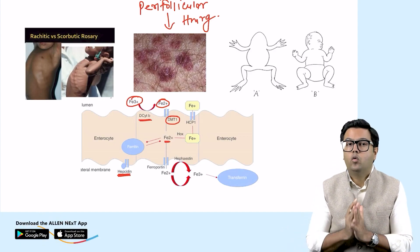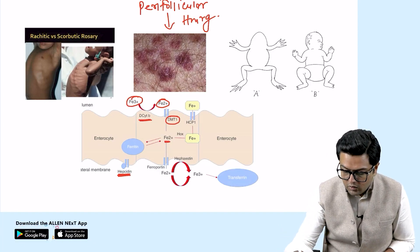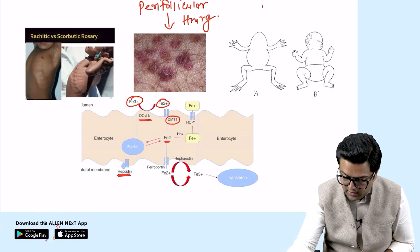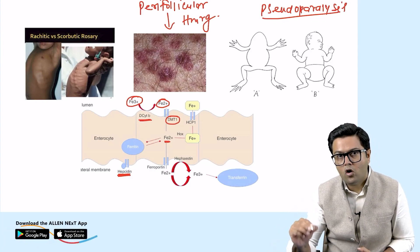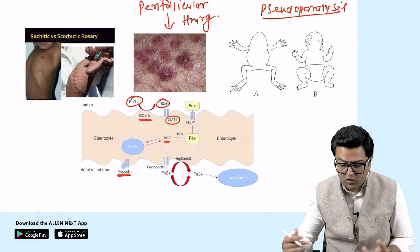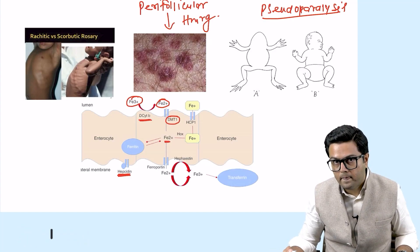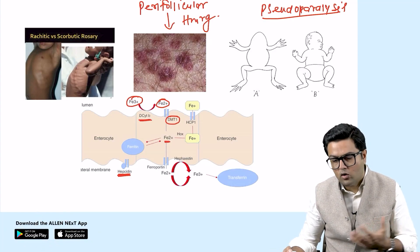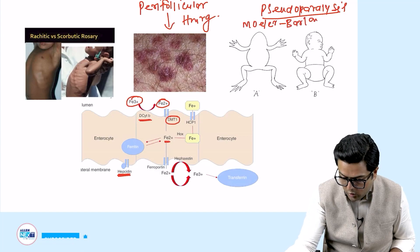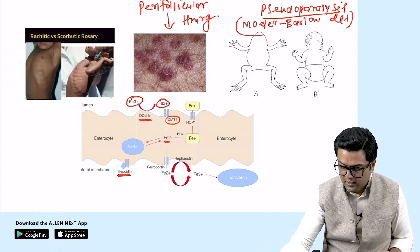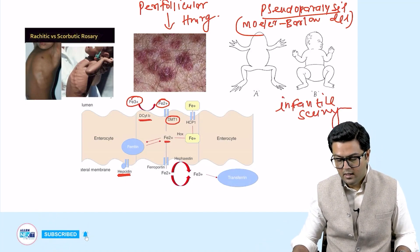Vitamin C deficiency can be seen in a child given boiled cow milk, which contains no vitamin C. Such a baby presents with pseudoparalysis, also known as frog leg posture. This condition is called Barlow's disease, also known as infantile scurvy.